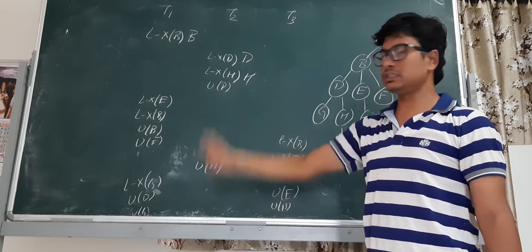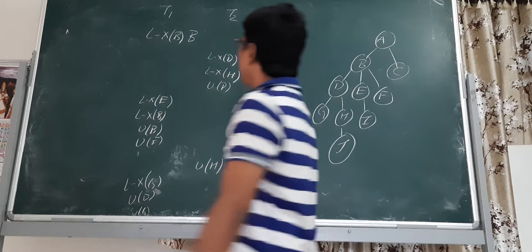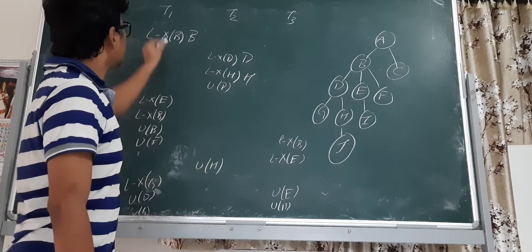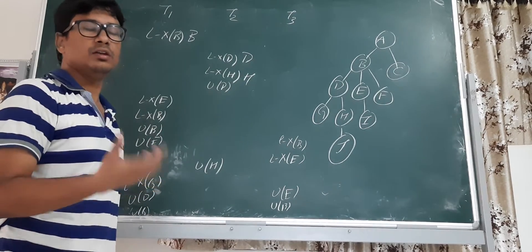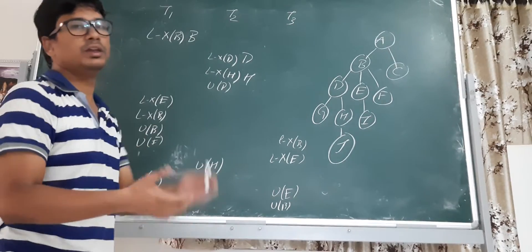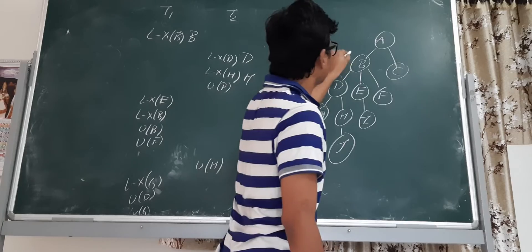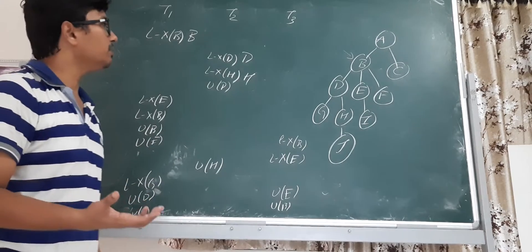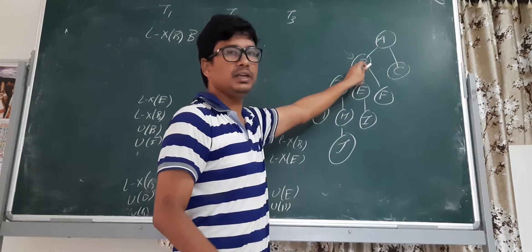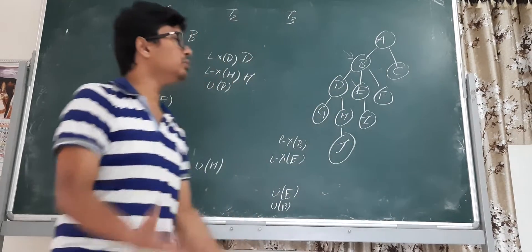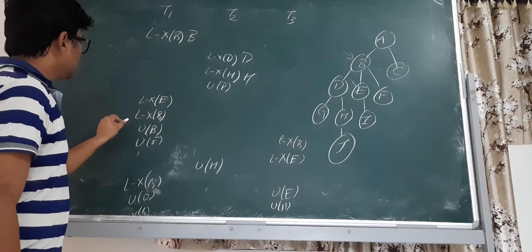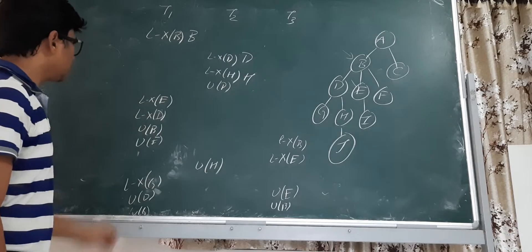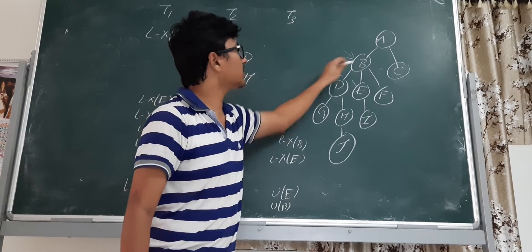All the locks are exclusive locks — there are no shared locks here. The second point is that each transaction can take the first lock on any data item. So T1 is taking the lock on data item B — that is permitted. Now lock on D: when this lock on D is allowed, its parent is B, and B is already locked, so we can allow taking an exclusive lock on D. That is also allowed because the parent is locked.